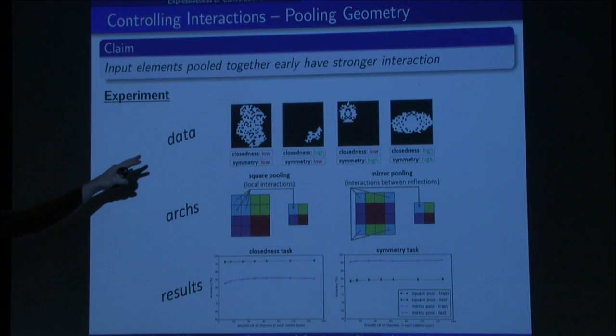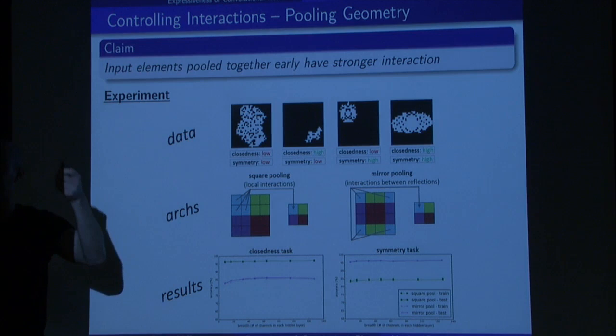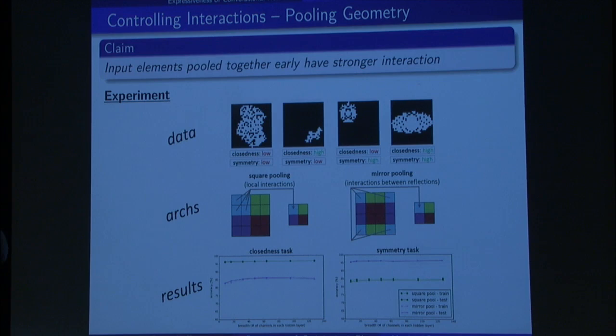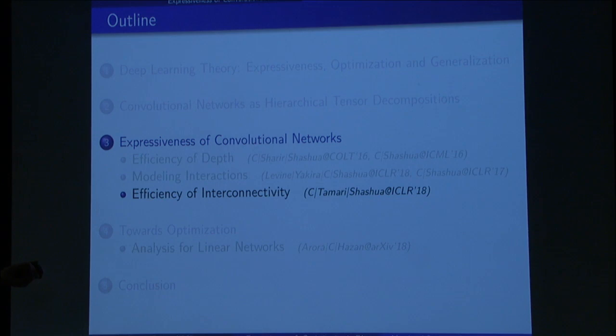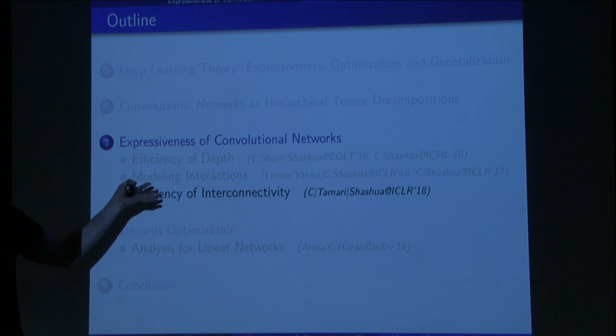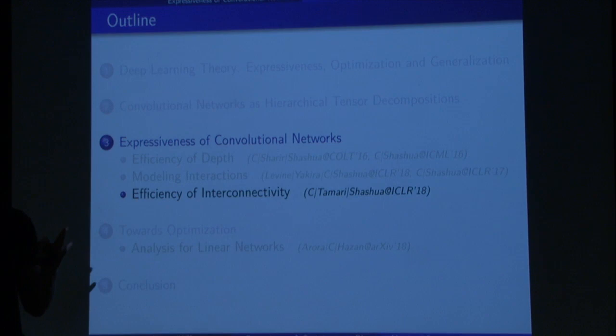In terms of pooling geometry, we show that elements pooled together earlier can have stronger entanglement. If you want to model strong entanglement between nearby pixels — which seems reasonable — you should pool adjacent elements, which is exactly what people do. This retroactively explains the custom of pooling adjacent elements: it implicitly biases you towards modeling interactions between nearby pixels. But you can also pool distant pixels if your task requires modeling symmetry across the image, and we demonstrate empirically that this can benefit detection of symmetric objects.